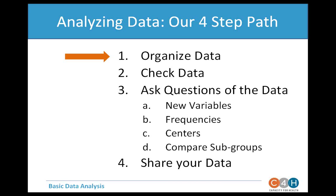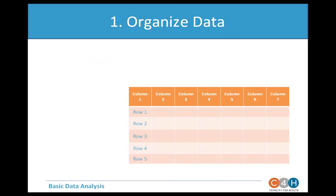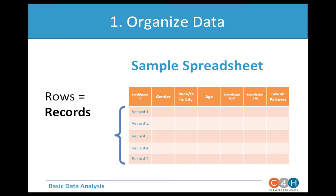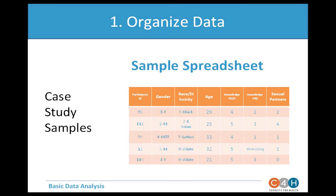Let's get on our analyzing data path, starting with organizing data from that survey into a spreadsheet — columns and rows, basically a fancy table. The column headers are our variables: participant ID, gender, race/ethnicity, age, and questions from the survey itself. The rows are records — in this case, each individual survey. A record could be a participant, a completed survey, or an event. It's a separate piece of data describing one thing across several variables.